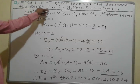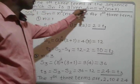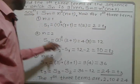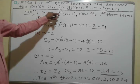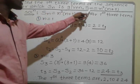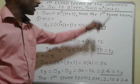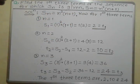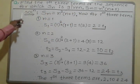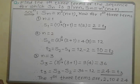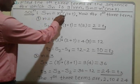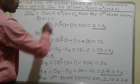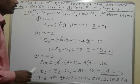Find the first three terms of the sequence for which Sn is given. Sn is equal to n square bracket n plus 1. This is given.